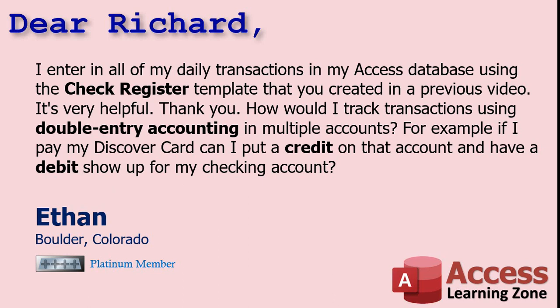Today's question comes from Ethan in Boulder, Colorado, one of my Platinum members. Ethan says: I enter all of my daily transactions in my Access database using the check register template that you created in a previous video. It is very helpful. How would I track transactions using double entry accounting in multiple accounts? For example, if I pay my Discover card, can I put a credit on that account and have a debit show up from my checking account? Well, yes Ethan, that's definitely possible.